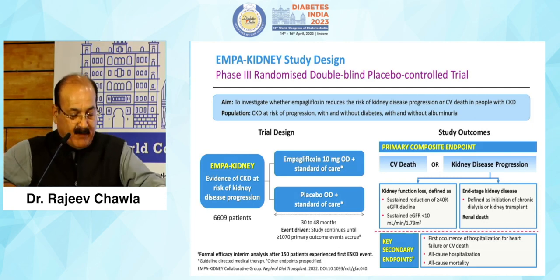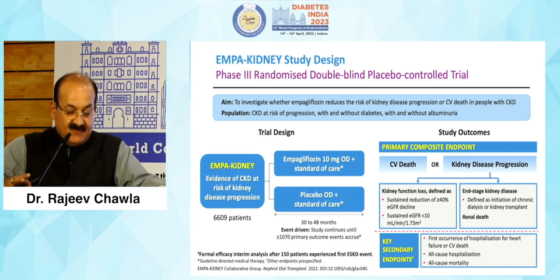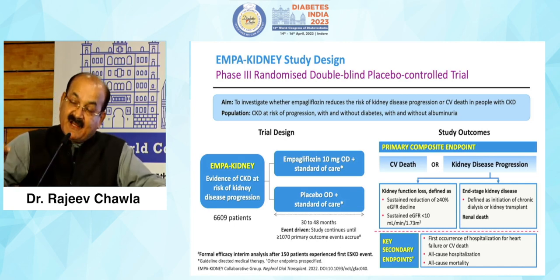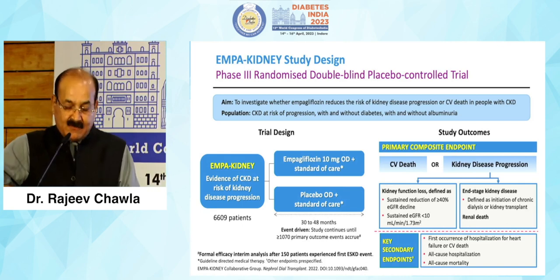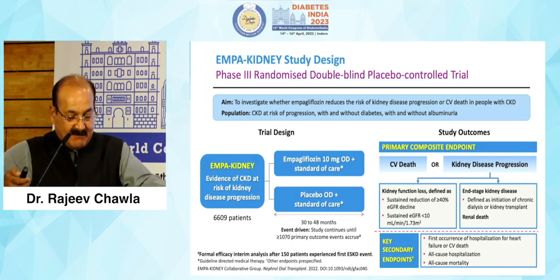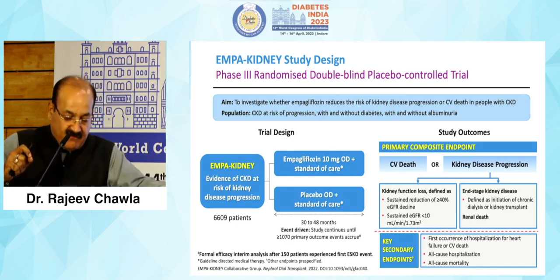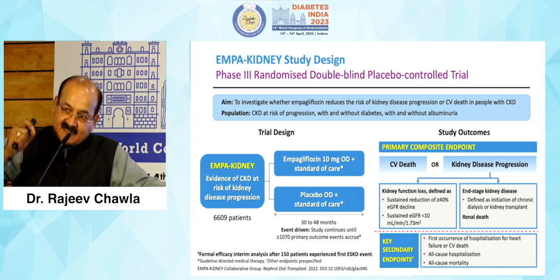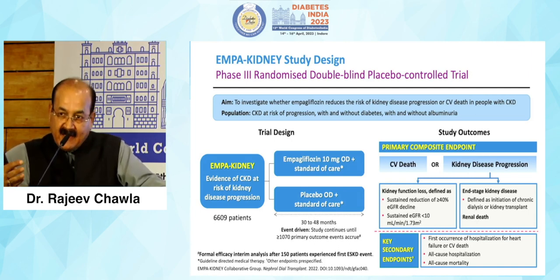In this population at risk of CKD — not all diabetic — 55 percent and 45 percent was the distribution. Almost 6,000 patients were either on empagliflozin 10 milligram daily with standard care or on placebo, followed for the primary outcome of CV death or kidney disease progression. Kidney disease progression was marked as reduction in eGFR to as low as 10 ml, or a sustained reduction of more than 40 percent in eGFR, or end-stage renal disease, renal death, or need for dialysis or transplant.